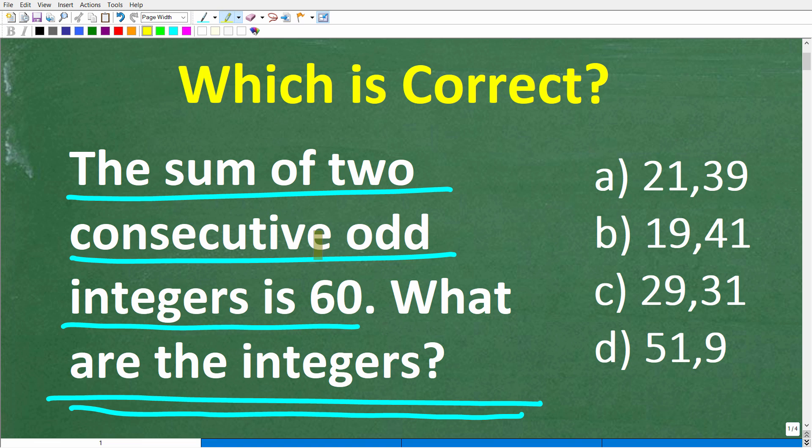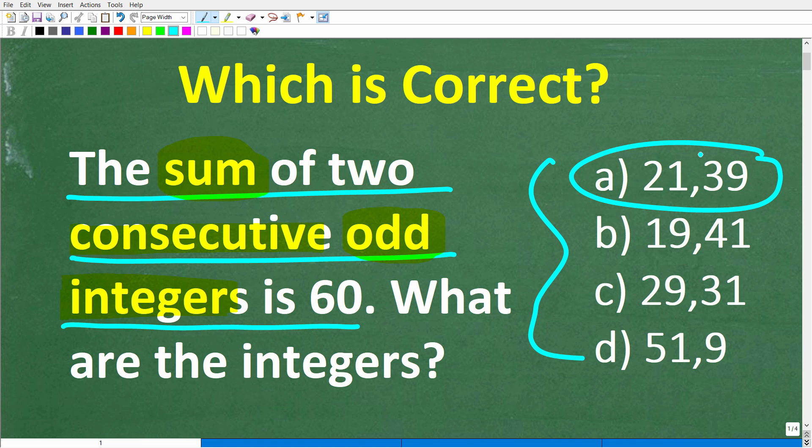Now, this is a pretty easy problem, assuming you know what consecutive means and what an integer is, and what odd is and what sum is. That's why I talked about having a very good math vocabulary. If you have a pretty decent math vocabulary, you should be able to easily identify the right answer. But this is a multiple choice question. Let's take a look at our choices. A is 21 and 39, B is 19 and 41, C is 29 and 31, and D is 51 and 9.